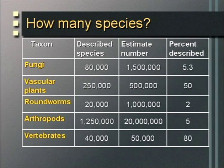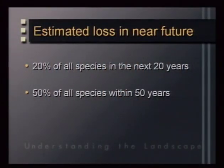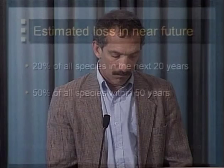Many of these species will become extinct before they are described. Estimates of extinction rates are just as variable as species count estimates, but by all accounts the rate of extinction has accelerated dramatically since the late 1800s. It's estimated that 20% of all species will go extinct in the next 20 years, and perhaps as high as 50% in the next 50 years. Most species occur in tropical rainforests, which make up only 7% of the earth's surface.